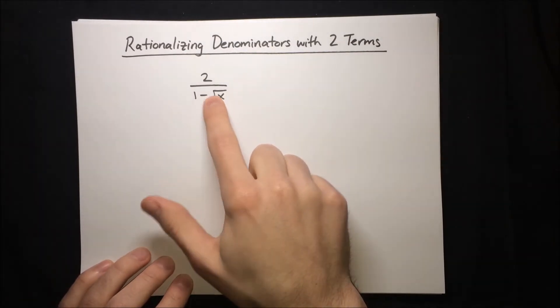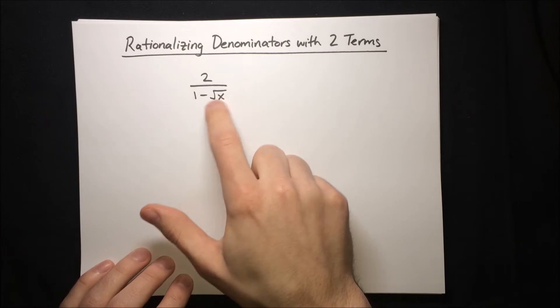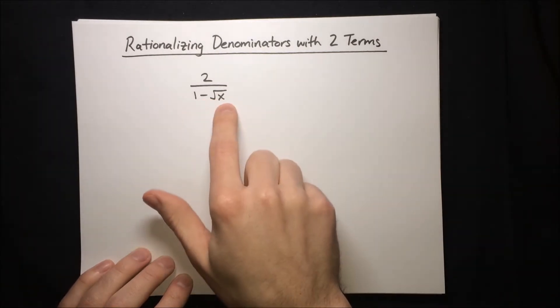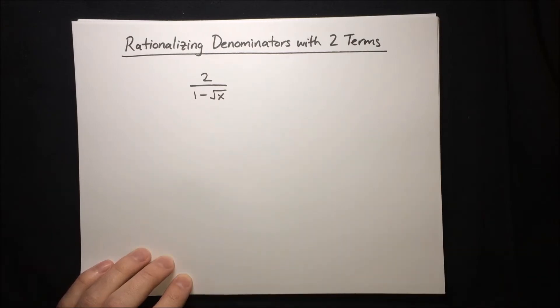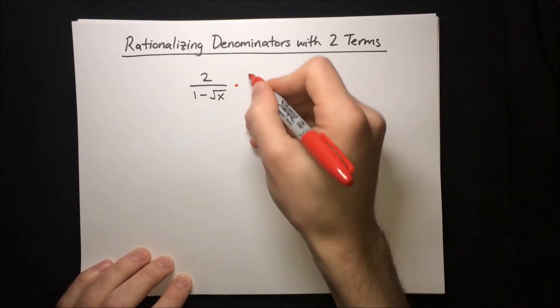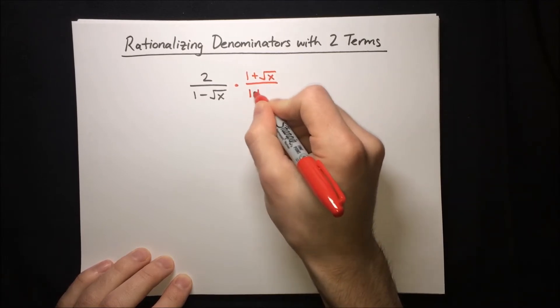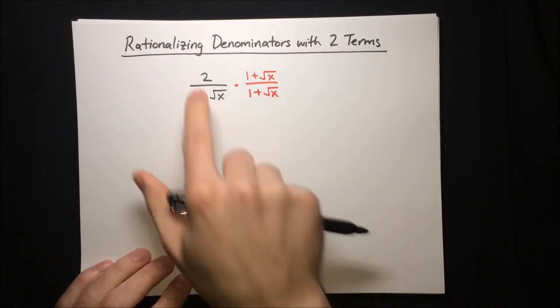To find the conjugate, we just take the same two terms, but we switch the sign between them. So the conjugate of this denominator is 1 plus root x. I'm going to multiply by 1 plus root x over 1 plus root x, and then we'll evaluate.